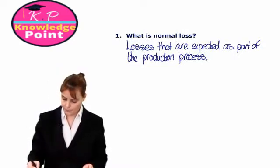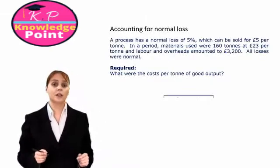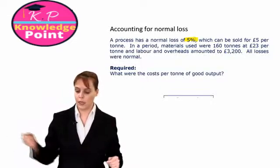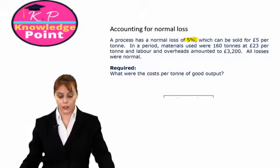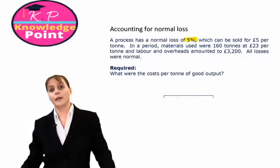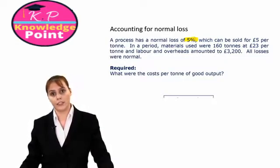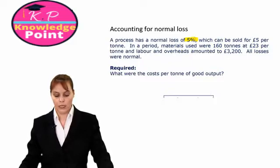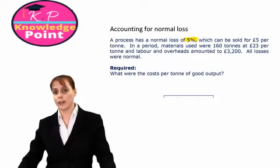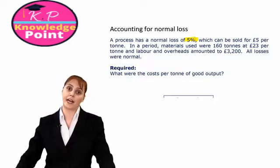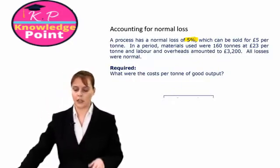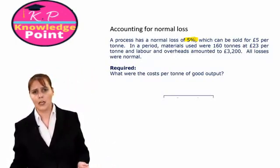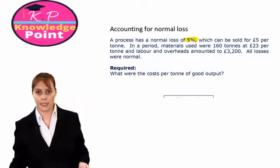So let's have a look at an example. We are told that for this company, a process has a normal loss of 5%, which can be sold for 5 pounds per tonne. Our inputs for a particular period were 160 units of material costing 23 pounds each, and we also incurred some labour and overhead costs of 3,200 pounds. So we want to calculate the cost per tonne, or the cost per unit, and prepare our process account for the period.